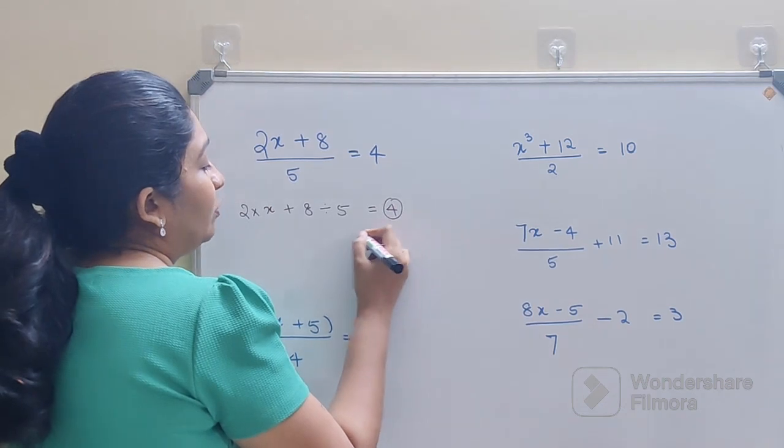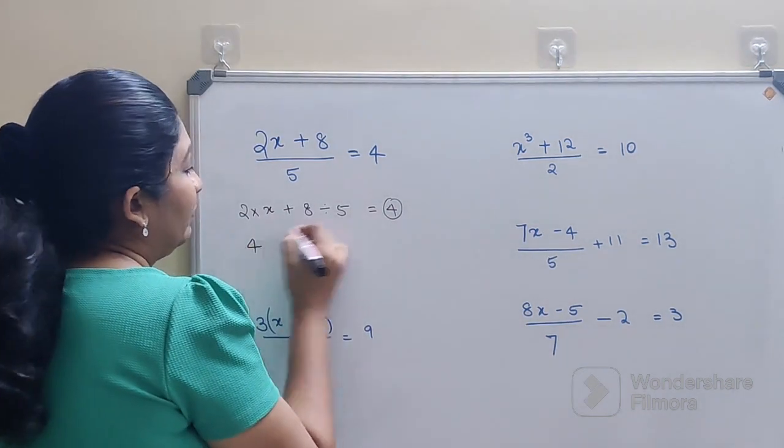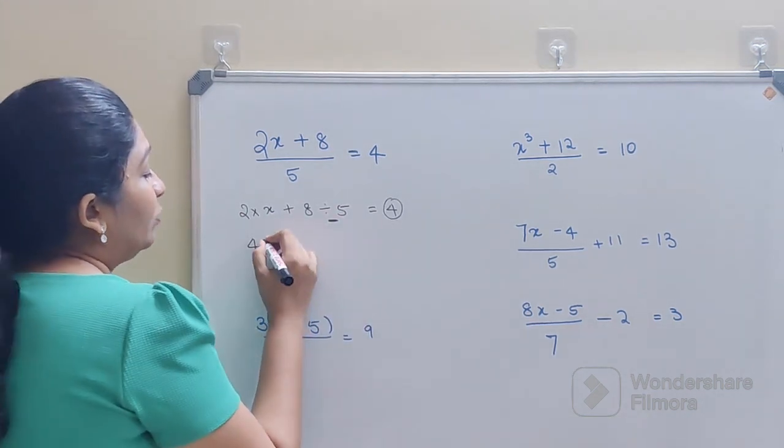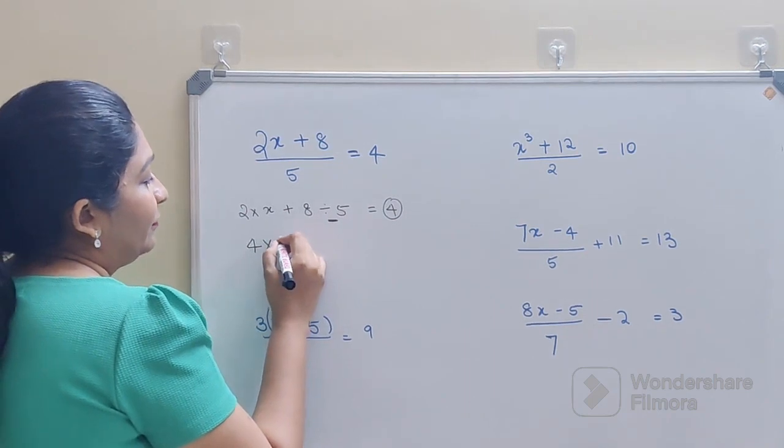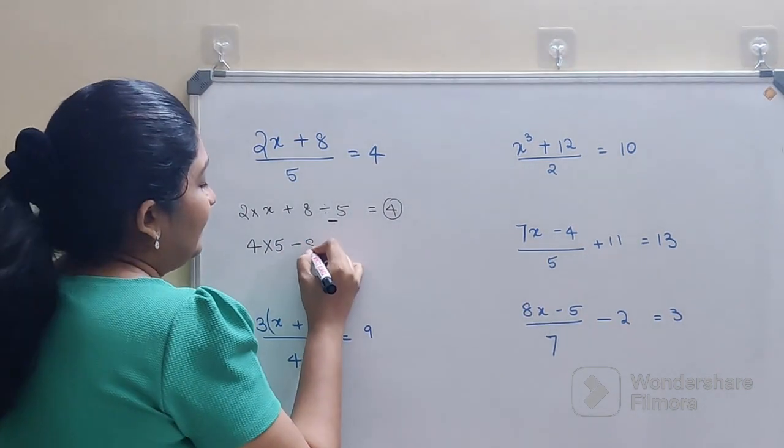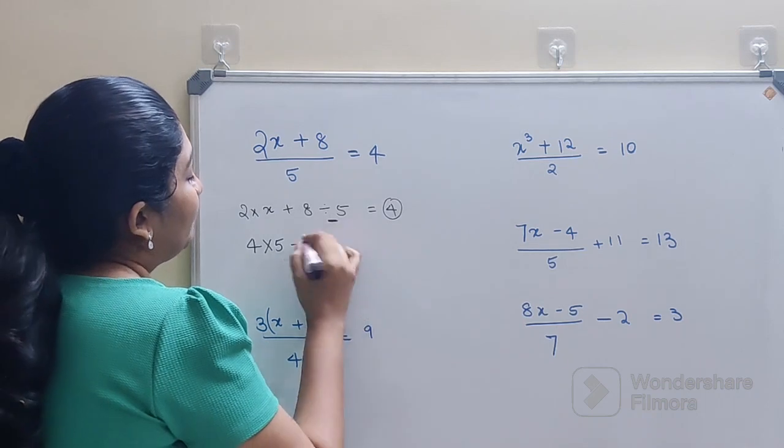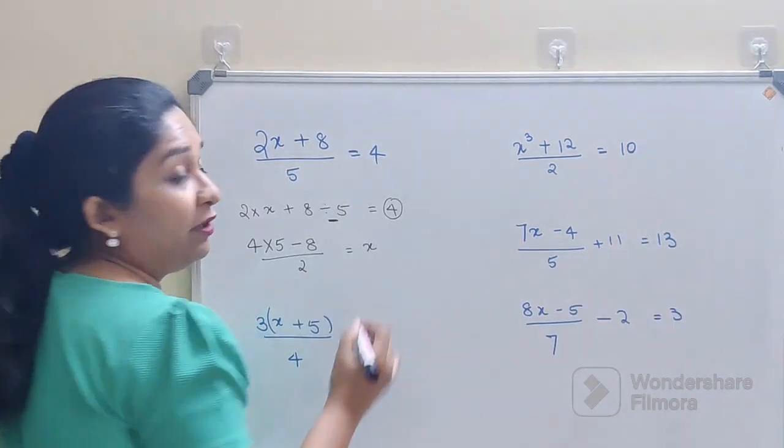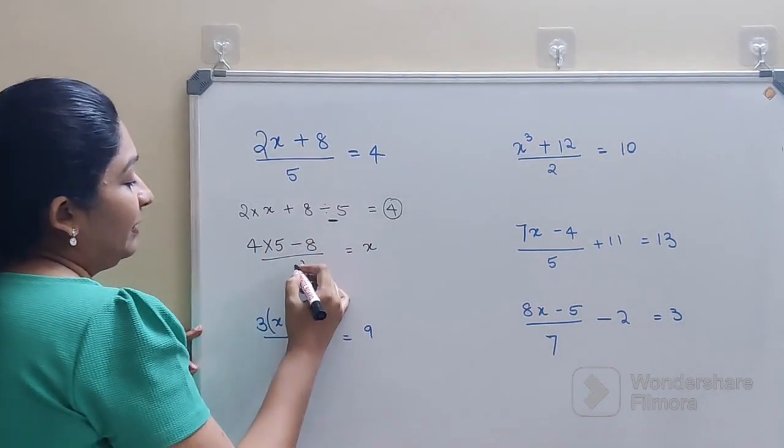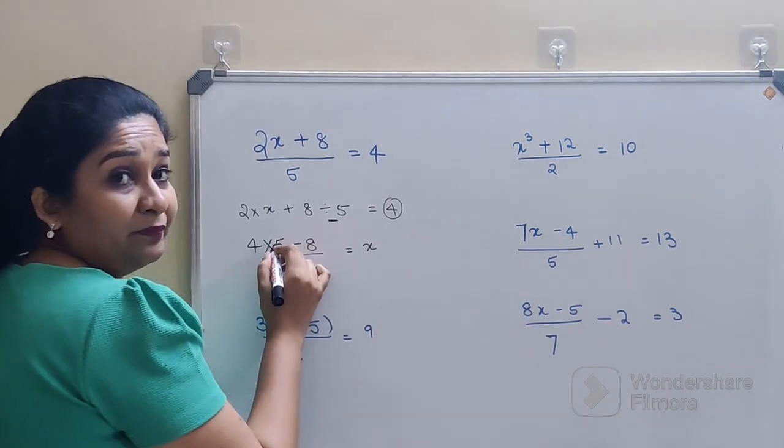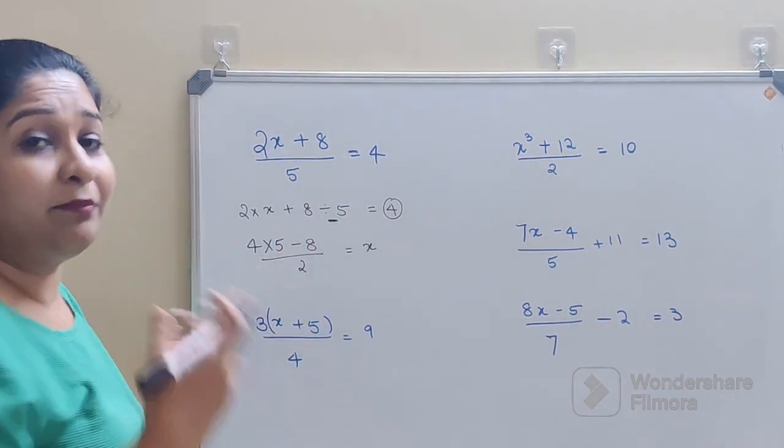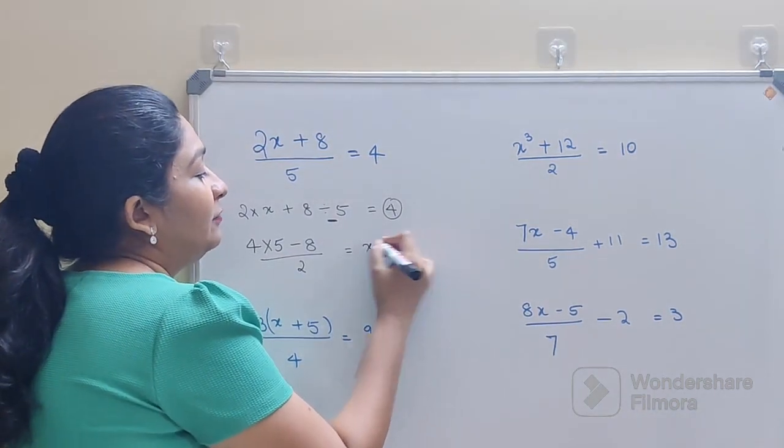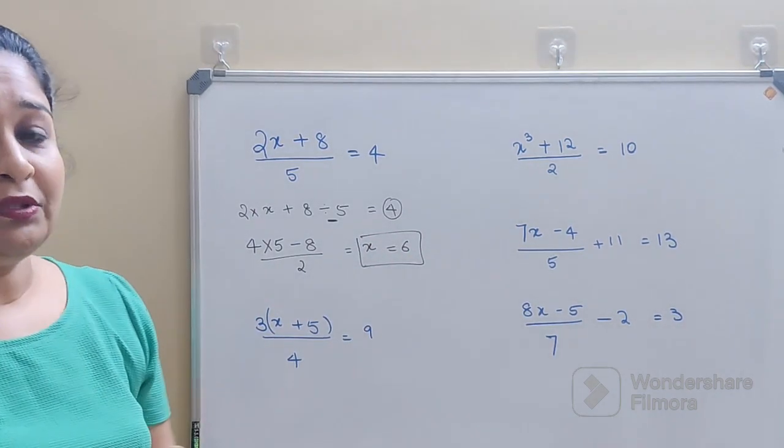So what we will do is, we will take this 4. Then, like I said, we will start from the right hand side. So it will be 4 into 5, then we will have minus 8, and then we will do division by 2, that will get you the answer for your x. So basically the answer is coming out to be what? 4 into 5 gets you 20, minus 8 gets you 12. 12 divided by 2 gets you 6. So the answer for this one is x is equal to 6.